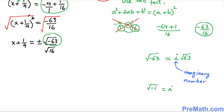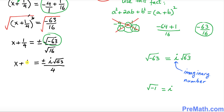Let's simplify. This can be written as positive or negative i times the square root of 63, divided by the square root of 16, which is 4. So we have x plus 1 over 4 equals plus or minus i times the square root of 63 over 4.